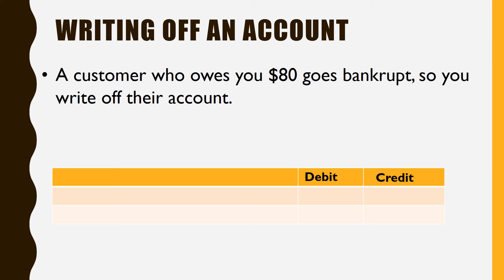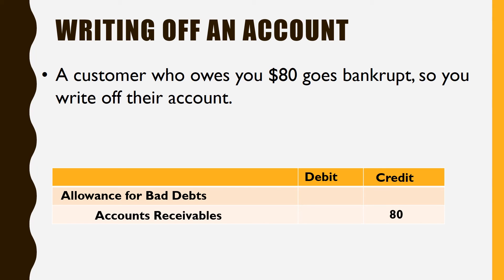The customer's not going to pay, so the account receivable has to go away. To make that happen, we credit the accounts receivable — start with the easy part first: credit accounts receivable. Then you just have to worry about what account to debit. We're going to reduce the allowance for bad debts by debiting the allowance. Think about it — that's where you were putting all those uncollectibles until people really defaulted. Now that this one has defaulted, we remove it from the allowance. The write-off is always the same two accounts: debit the allowance, credit the accounts receivable.